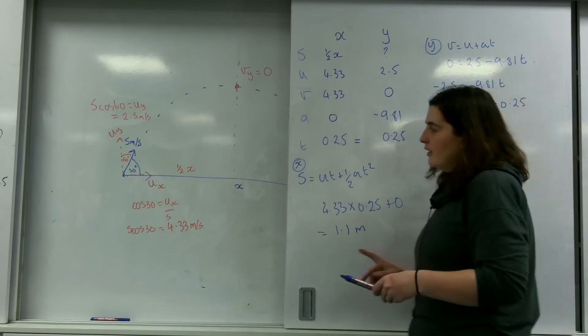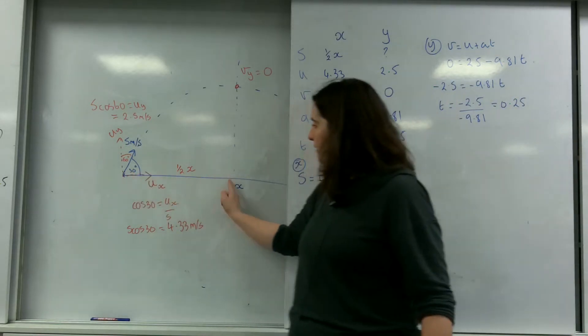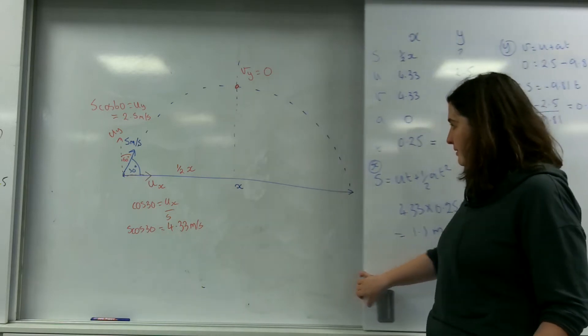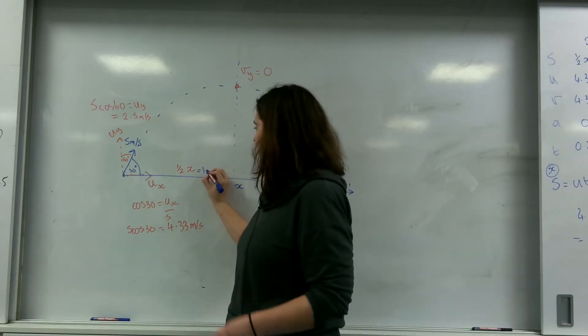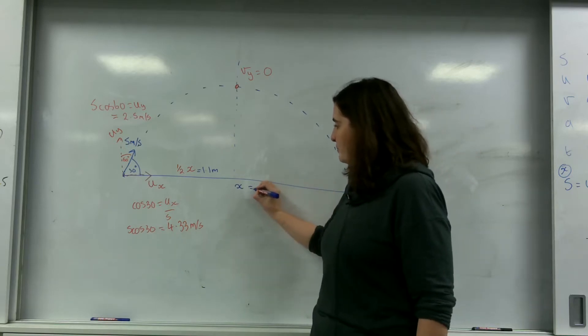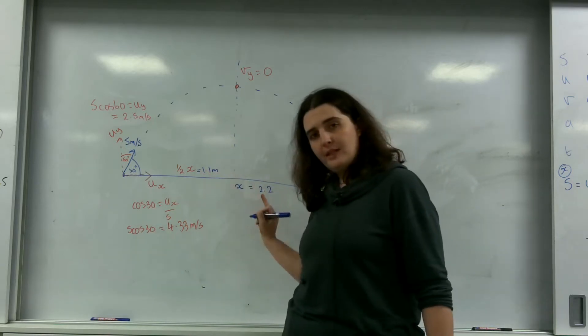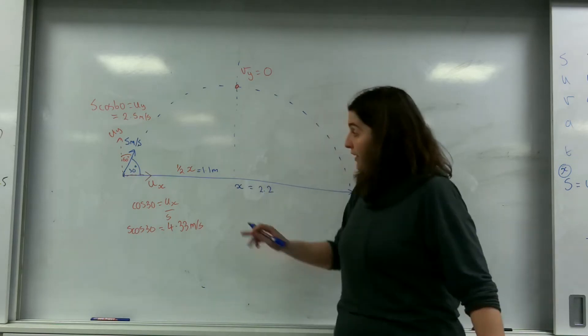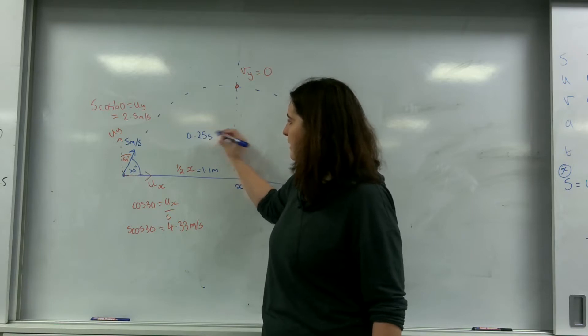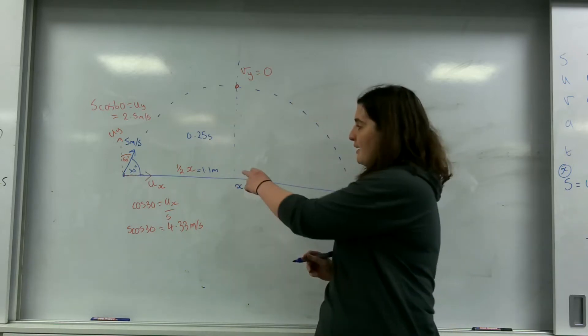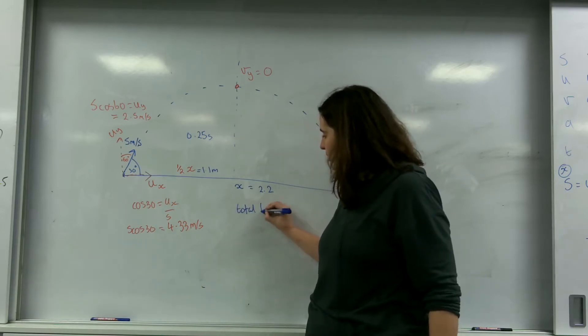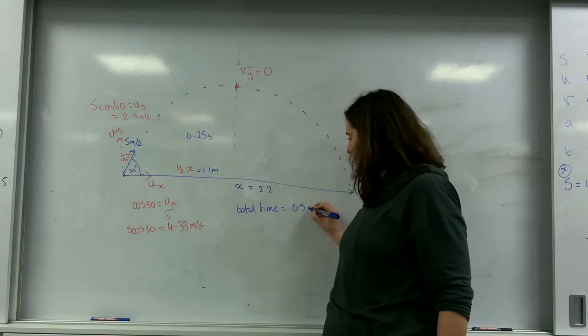So I know the distance between here and the halfway point is 1.1 metres. This means my whole distance here must be 2.2 because it's double this. I know that to get from here to here took me 0.25 seconds, which means to get from here to here is going to take me another 0.25. So my total time is 0.5 seconds.